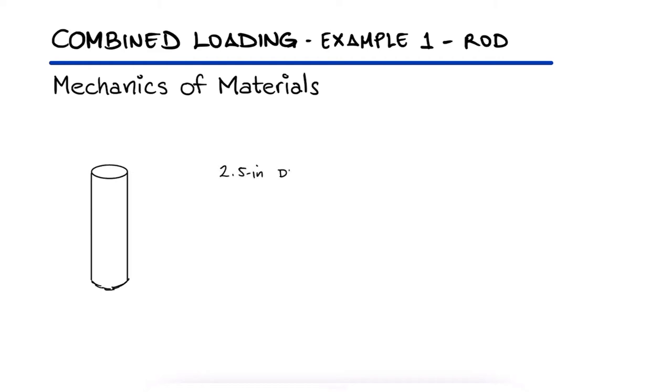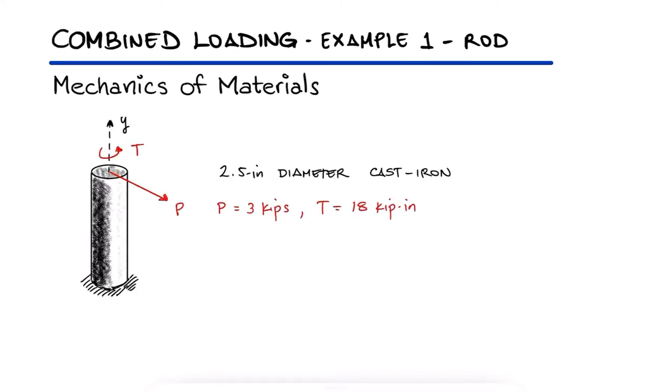A 2.5 inch diameter cast iron post is subjected to a 3 kip force and an 18 kip inch couple at the top. What are the principal stresses at locations A and B 9 inches away from the top?